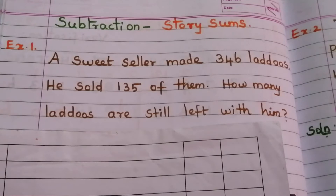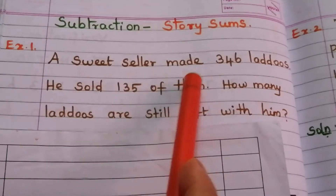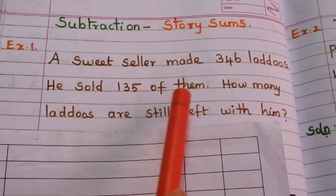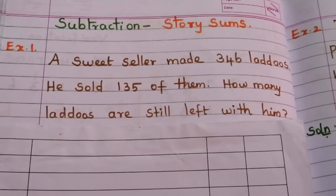Today we are going to discuss story sums or word problems from subtraction. Example 1: A sweet seller made 346 laddoos. He sold 135 of them. How many laddoos are still left with him? To solve any story sums, we have to follow three steps: first, note down the given data; second, find what we need to find out and which operation to use.